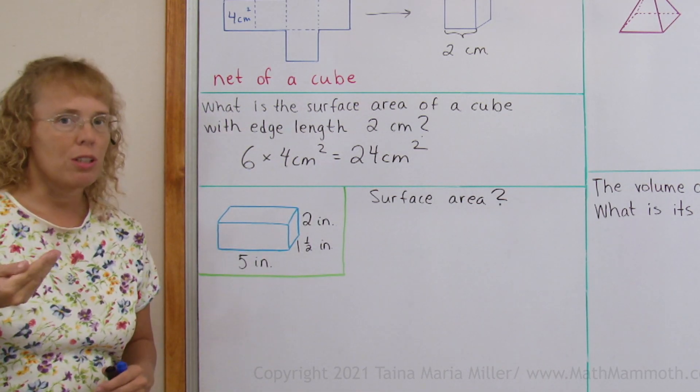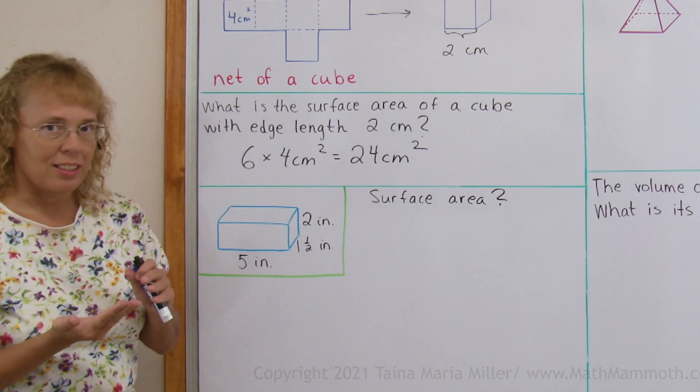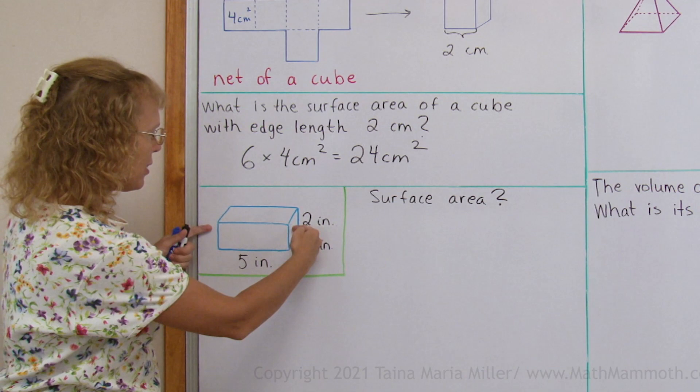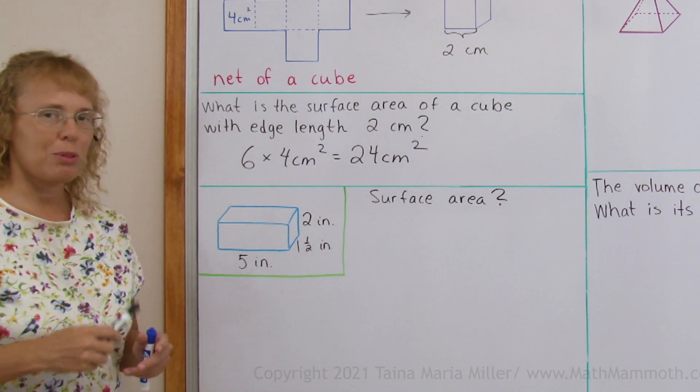Now since it is a box, we know that the top and bottom are identical, right? And then these two ends have the same area, and then the front and back also. So that helps us a little bit.